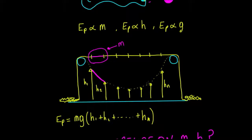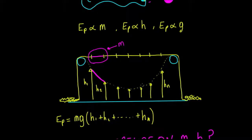If I were to move this rope to any other curve — for example, if I pulled down on either side to make a straight line — the potential energy of that position would be greater than the potential energy of the equilibrium position.